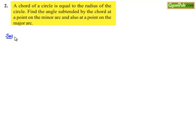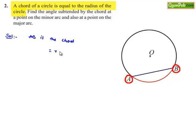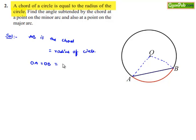Moving on to the solution, let us consider a circle with center O and AB as the chord, as shown in the figure. Here AB is the chord and is equal to the radius of the circle. Let us join OA and OB. We know that OA is equal to OB, which is also equal to the radius of the circle. Since the chord length is also equal to the radius, we can say OA is equal to OB is equal to AB.